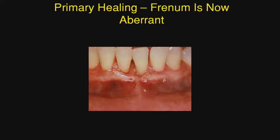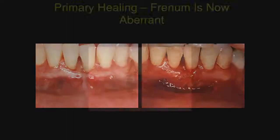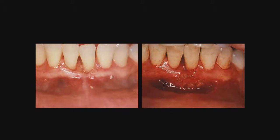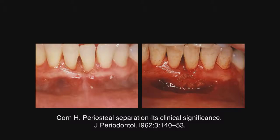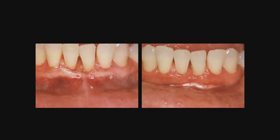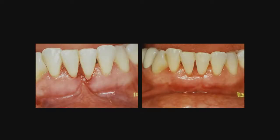With primary healing present, you can see that we do have attached gingiva. But now the frenum is aberrant and we need to address it. We performed the Korn technique with periosteal separation fenestration. We see the initial healing and the apical scar present preoperatively, and this is how the area healed up.